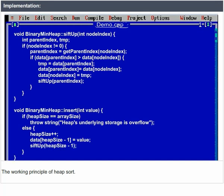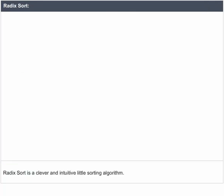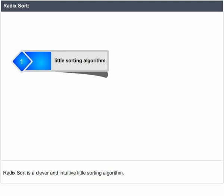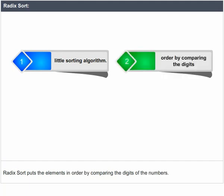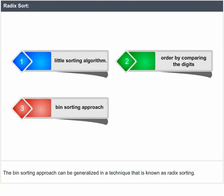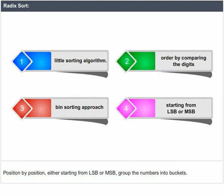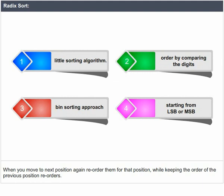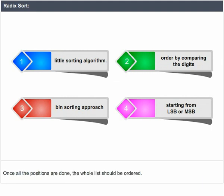Radix Sort is a clever and intuitive sorting algorithm that puts elements in order by comparing the digits of numbers. The bin sorting approach can be generalized in a technique known as radix sorting. Position by position, starting from either the LSB or MSB, group the numbers into buckets. When moving to the next position, reorder them for that position while keeping the order of previous position reorders. Once all positions are done, the whole list is ordered.